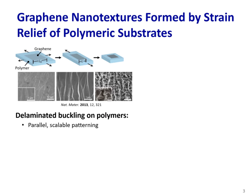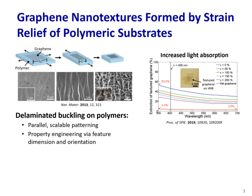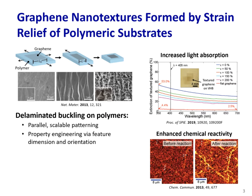Out-of-plane texturing of graphene has emerged as an alternative method to engineer the properties of graphene and maintain structural integrity. In particular, nanoscale delaminate buckles can form spontaneously over centimeter-scale areas by transferring graphene on a pre-strained elastomer sheet and relieving the strain. Because of increased aerial density per unit projected area, buckled graphene should increase light absorption compared to its flat counterpart. In addition, out-of-plane bending introduces re-hybridization between sigma and pi orbitals in graphene, which enhances the chemical reactivity with increasing local curvature.